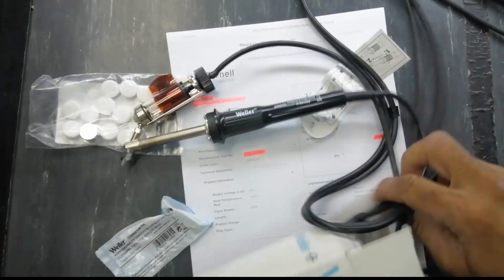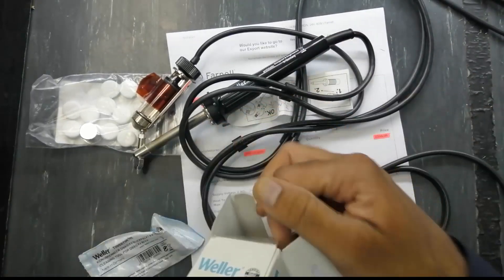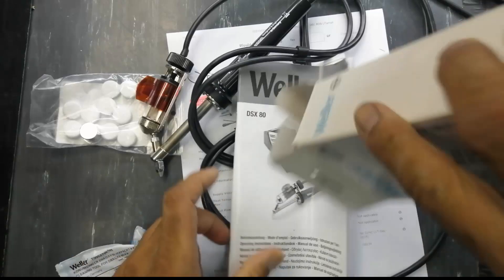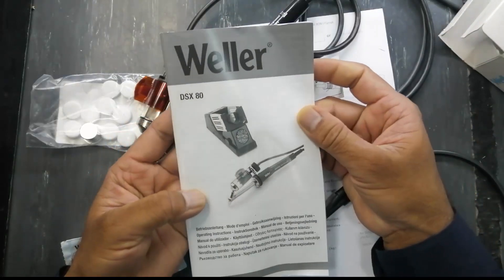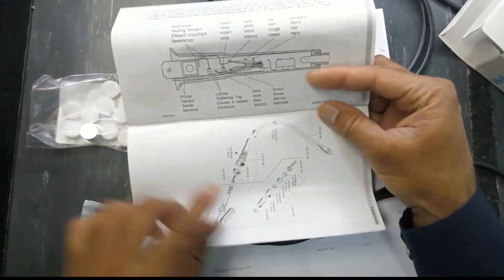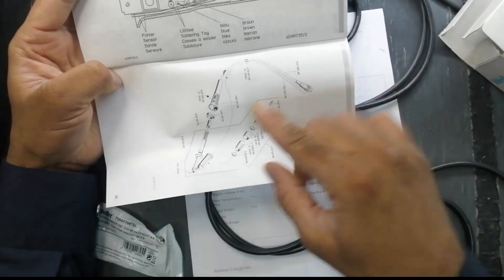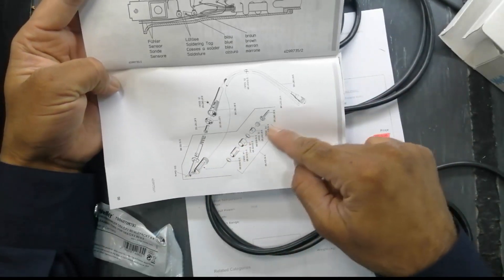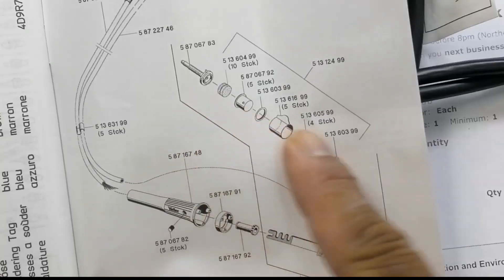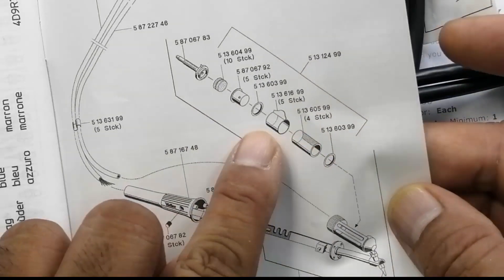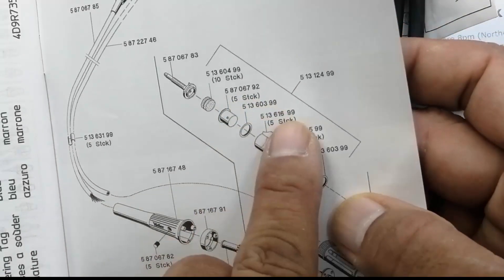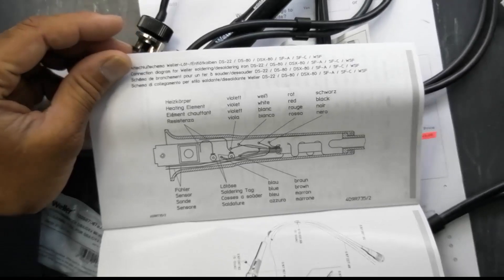Here is the desoldering gun and its service manual. If you want to order or purchase parts, every part has its part number here - filter, nozzle, glass, everything has part numbers. Here are the wiring connections.